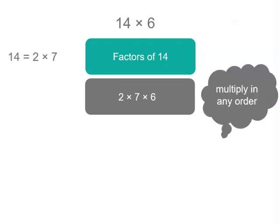And you know, we can actually multiply in any order. So you could write these in a different order, because what we're going to do is multiply 2 by 6 first. Why are we doing that? Remember, we know our 12 times tables, and 2 6s are 12.